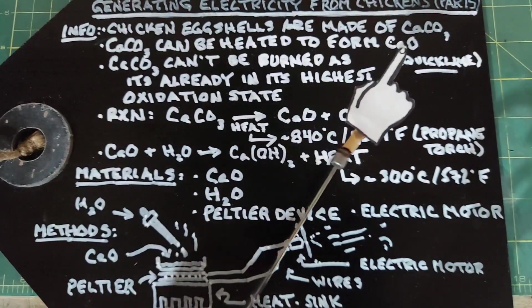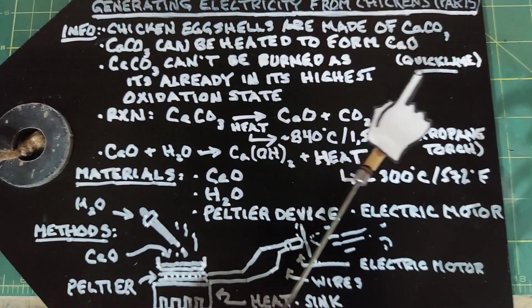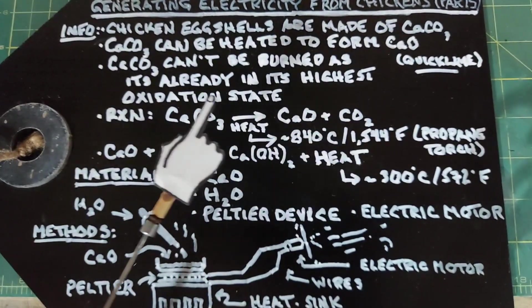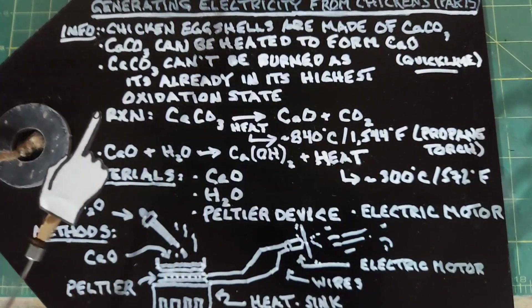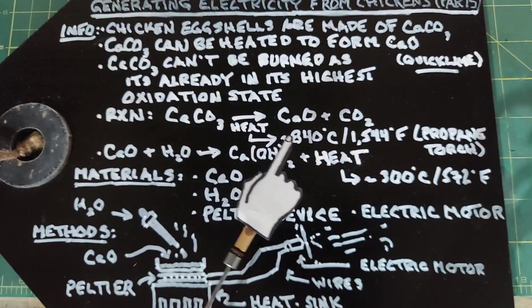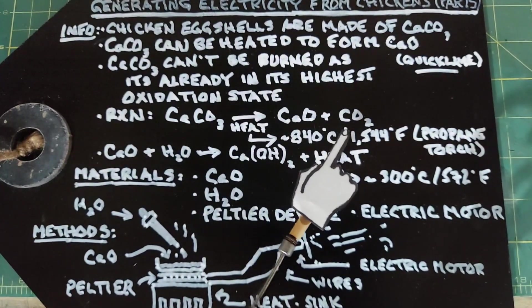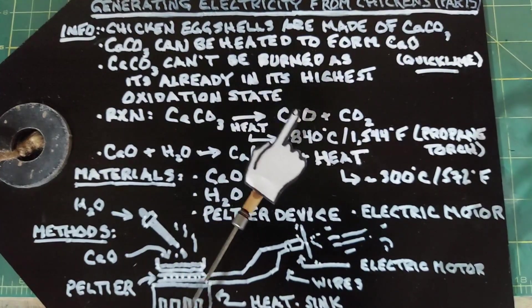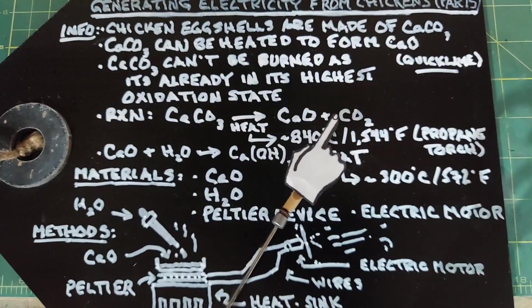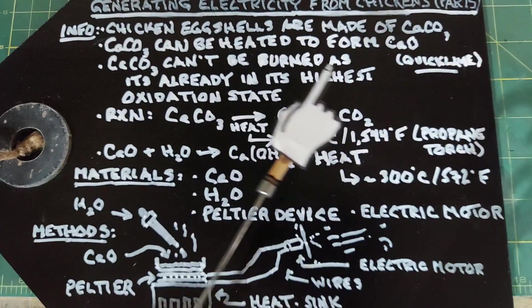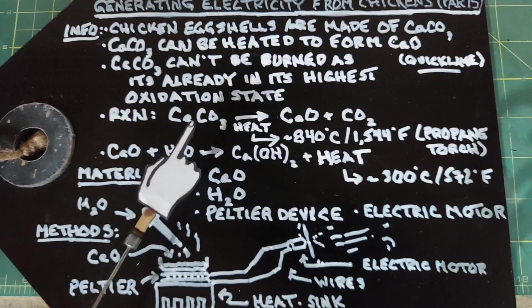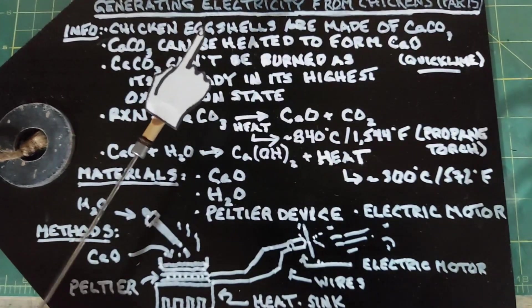Another name for calcium oxide is quicklime. Calcium carbonate can't be burned as it's already in its highest oxidation state. If we look at the reaction here, we have calcium carbonate with a lot of heat, about 840 degrees Celsius, which is 1,544 degrees Fahrenheit. It will turn into calcium oxide by releasing the carbon dioxide. Propane torches get to this temperature, so that's what I'm going to use to heat the calcium carbonate from the chicken eggshells.